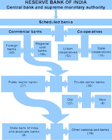In 1969 the Indian government nationalized fourteen major private banks, one of the big banks was Bank of India. In 1980, six more private banks were nationalized. These nationalized banks are the majority of lenders in the Indian economy. They dominate the banking sector because of their large size and widespread networks. The Indian banking sector is broadly classified into scheduled and non-scheduled banks.